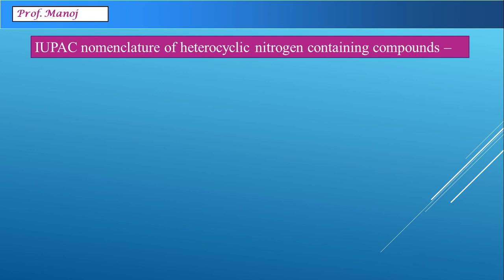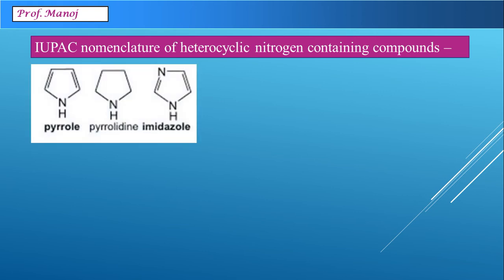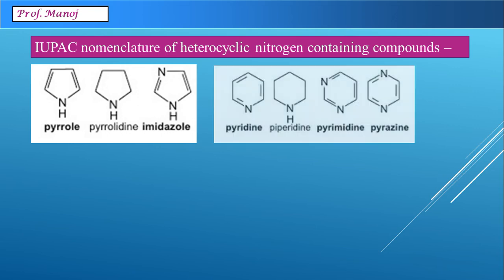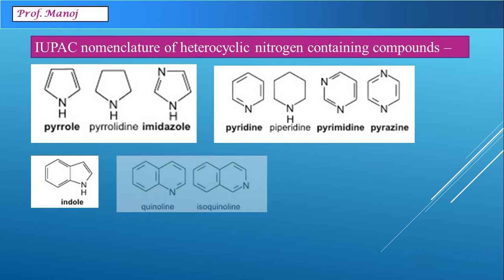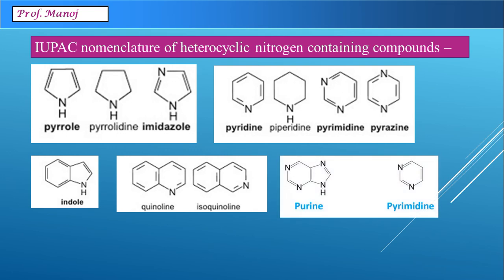Some additional examples that JEE Mains, JEE Advanced, and NEET students will need: these are heterocyclic nitrogen-containing compounds. Examples include pyrrole, pyrrolidine, and imidazole. Think about whether each nitrogen atom is primary, secondary, or tertiary. Another group of compounds includes pyridine, piperidine, pyrimidine, and pyrazine. Bicyclic compounds include quinoline and isoquinoline, which differ in the position of nitrogen. Purine and pyrimidine are the famous bases present in DNA and RNA. These are extra examples in case they appear in the exam.